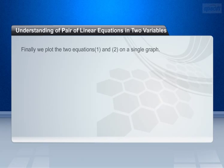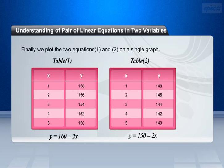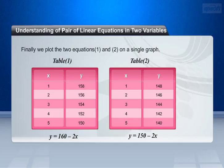Similarly, assume the x values from 1 to 5 to get y values from equation 2, that is, y = 150 - 2x. Finally, we plot the two equations — equation 1, y = 160 - 2x, and equation 2, y = 150 - 2x — on a single graph, by taking the values from table 1 and table 2.